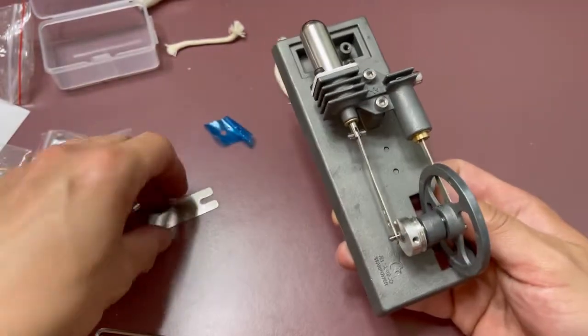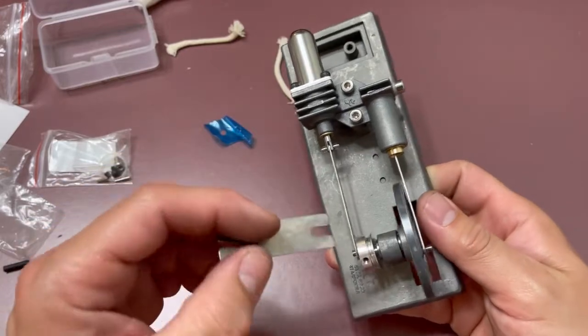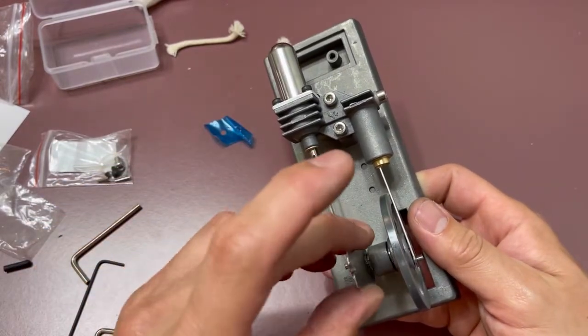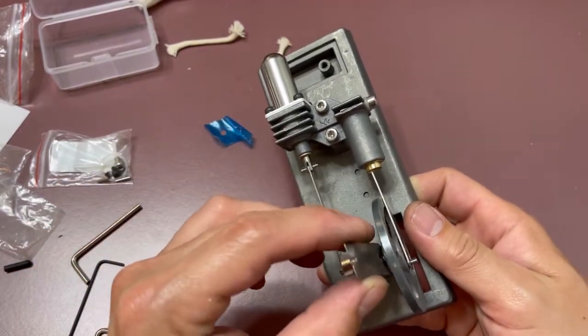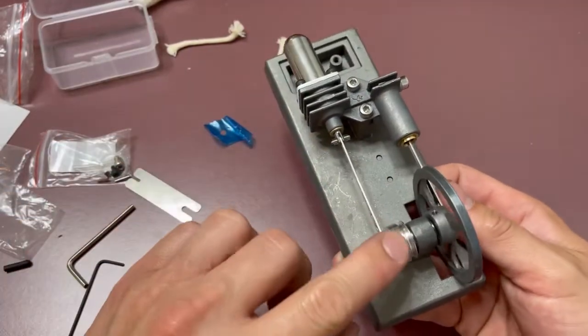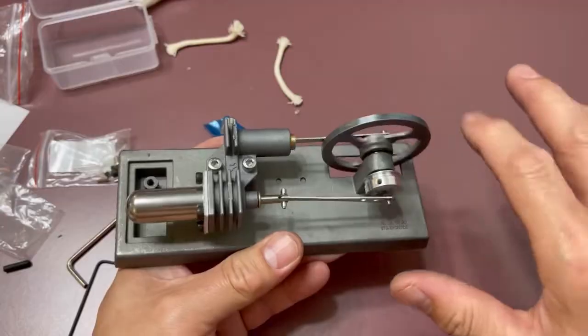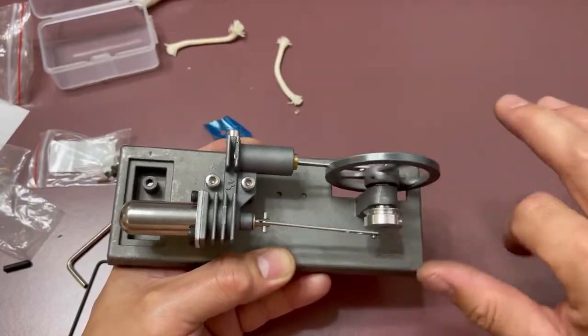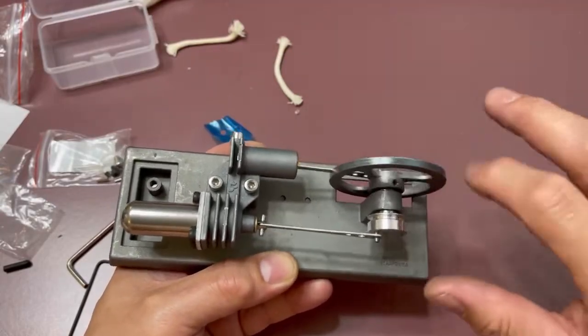It did come with this weird little tool here, not sure what it was, but we used it to fit over the shaft to space the flywheel and the driving gear here away from the casting. So it does feel really smooth now. That could be an issue with some people building these things.